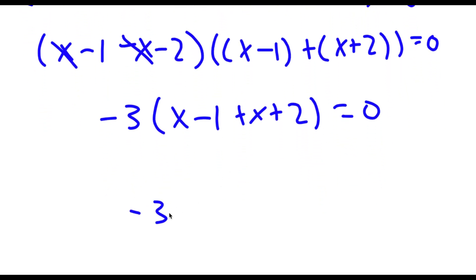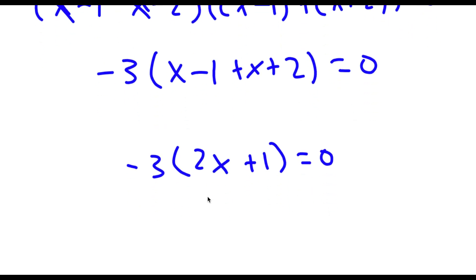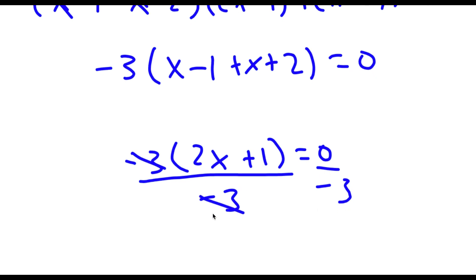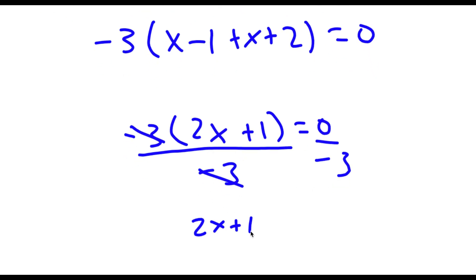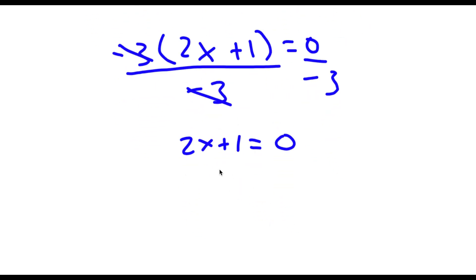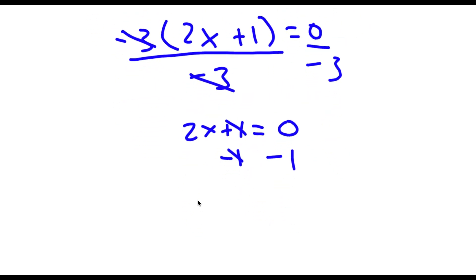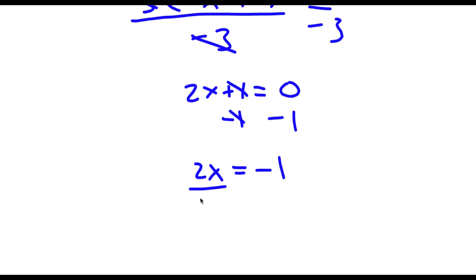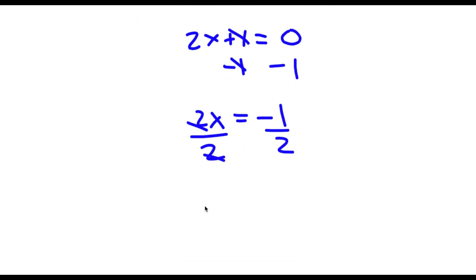Now x plus x is 2x, and negative 1 plus 2 is positive 1, so this is equal to 0. Now I can divide both sides by negative 3, so I'm left with 2x plus 1 is equal to 0. Now if I subtract 1 on both sides, I have 2x is equal to negative 1. And if I divide by 2 on both sides, I'm left with x is equal to negative one half.